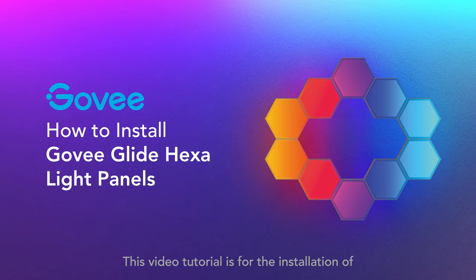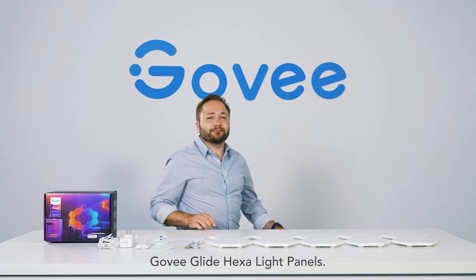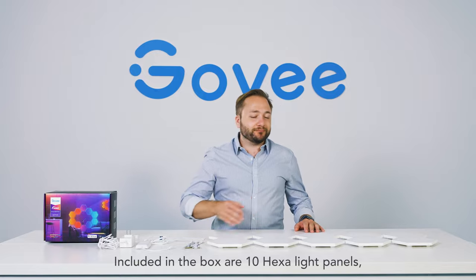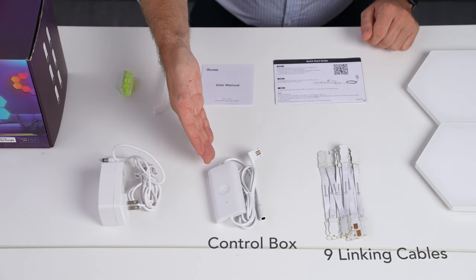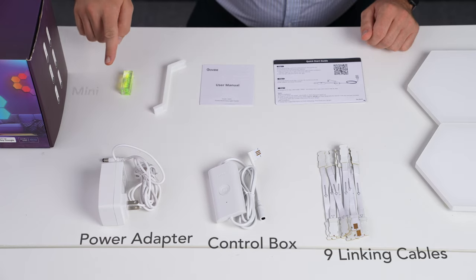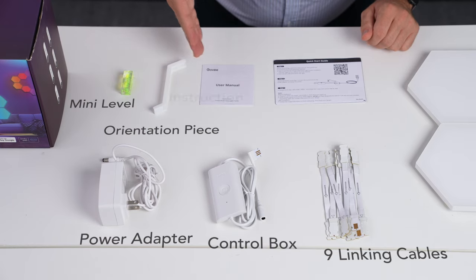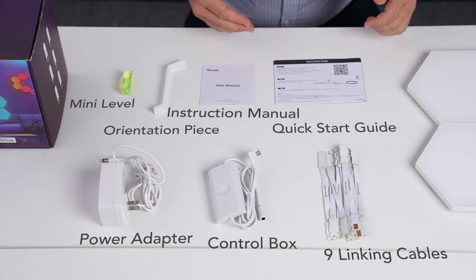This video tutorial is for the installation of Govi Glide HEXA light panels. Included in the box are 10 HEXA light panels, 9 linking cables, a control box, power adapter, mini level, orientation piece, instruction manual, and quick start guide.